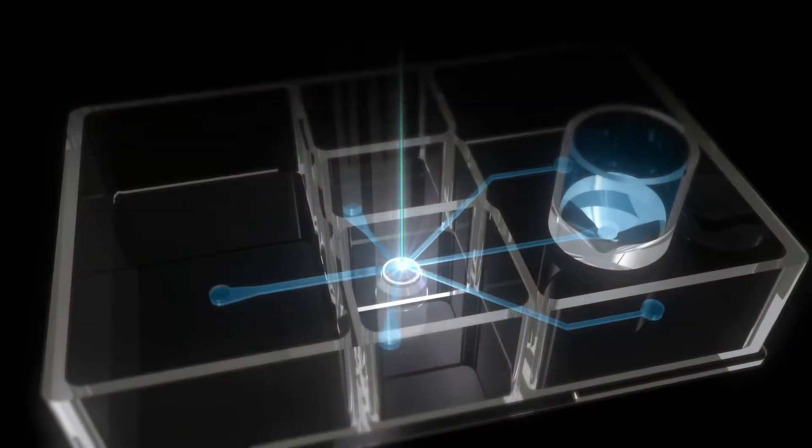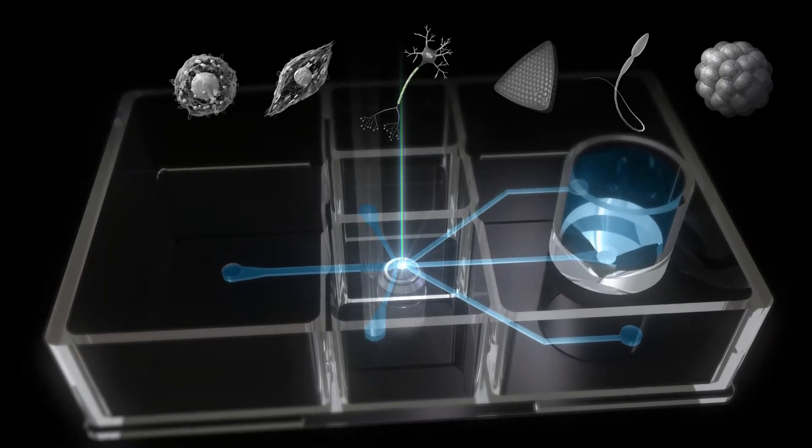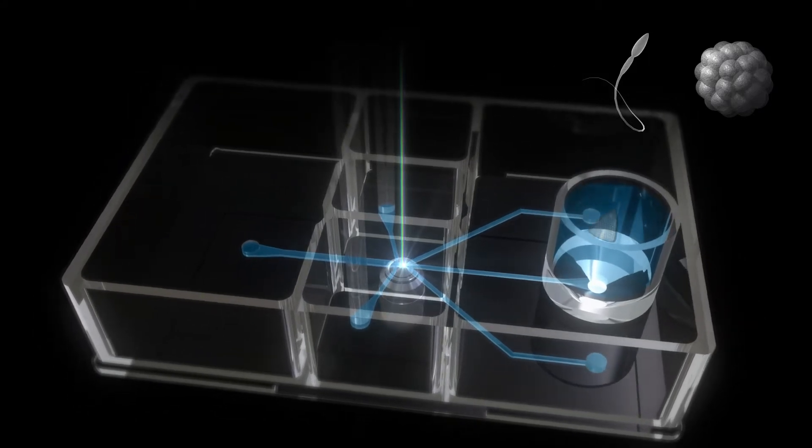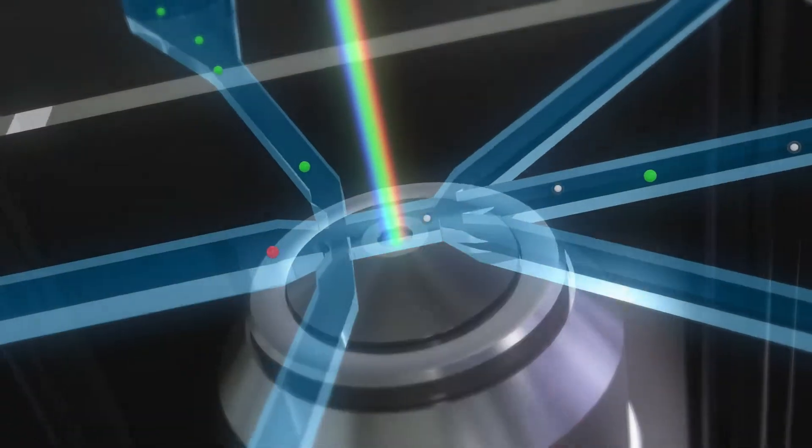OnChipSort allows sorting of many cell types ranging from 0.5 to 150 micrometers, including bacteria, myocytes, neurons, marine organisms, sperm, and cell clusters.